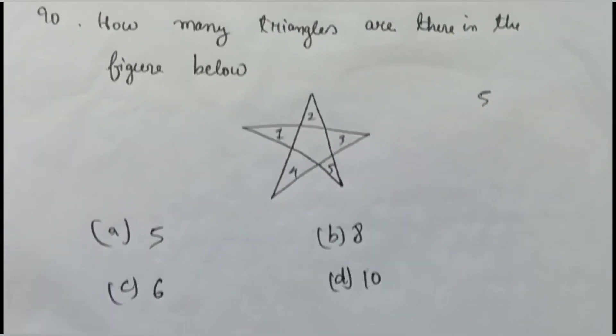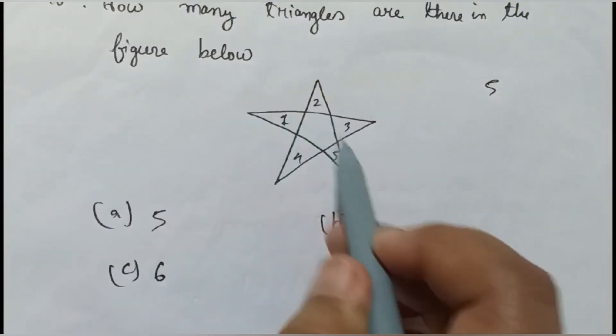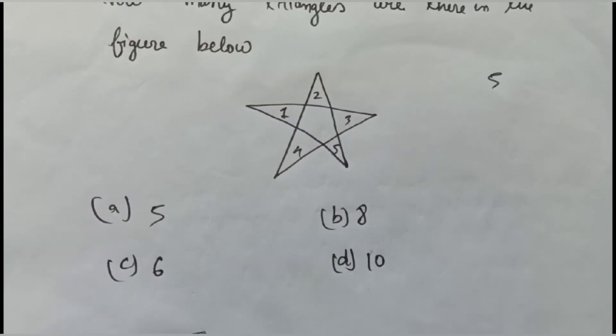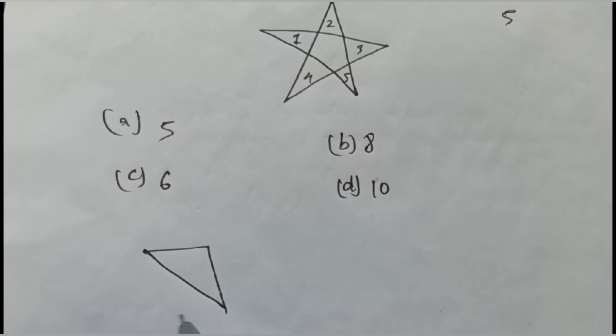First of all, this is also a triangle. We will draw it here separately, okay? Because it is difficult, we will draw here like this.